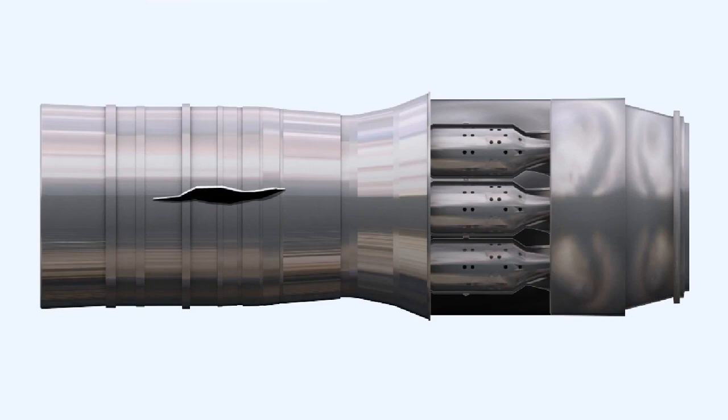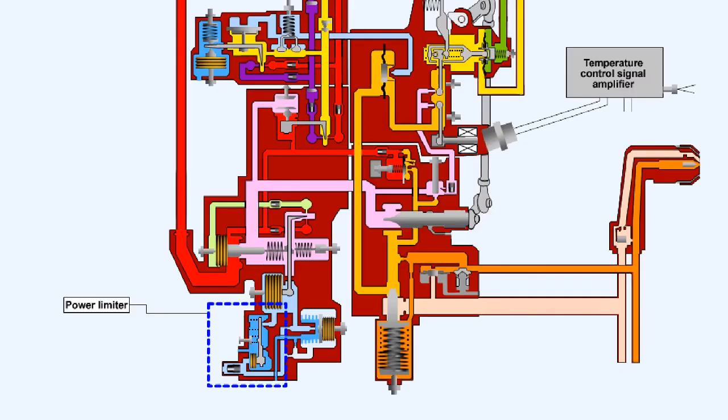The ability of the compressor to withstand internal pressure is limited by the strength of the materials from which its casing is made. If the compressor casing is subjected to pressures greater than its design maximum, it will break, with probably catastrophic consequences. To prevent compressor casing failure, the fuel control unit incorporates a power limiter device.